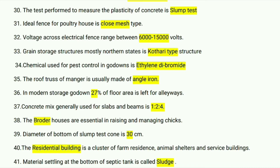The concrete mix generally used for slabs and beams is in the ratio 1:2:4. Brooder houses are essential in raising and managing chicks. The diameter of the bottom of a slump test cone is 30 centimeters.